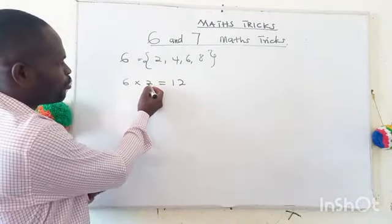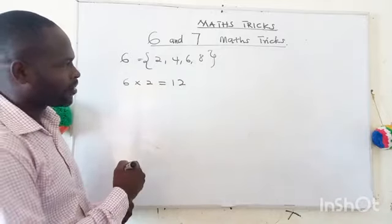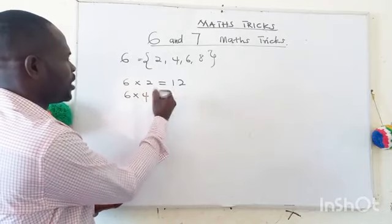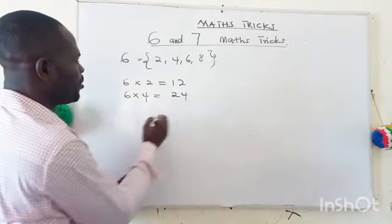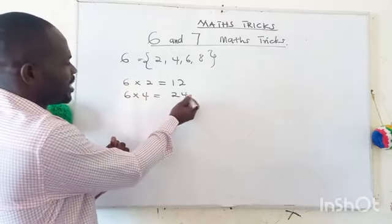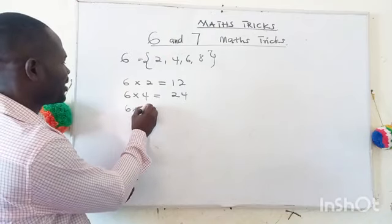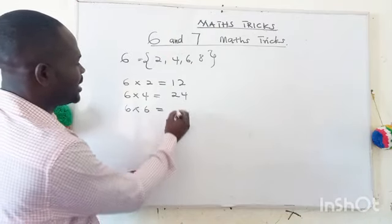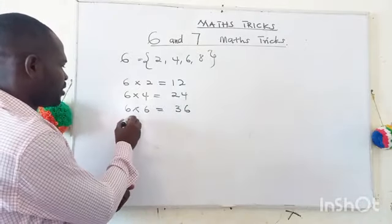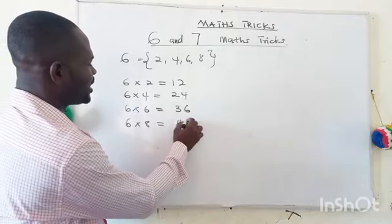The number you use to multiply with six is repeated in the answer. Six times four gives you 24. Six times six gives you 36. Six times eight gives you 48.